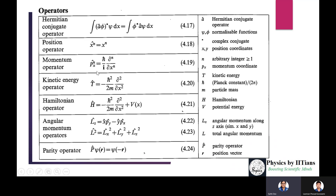The position operator is x^n. The momentum operator px (or px^n) can be written as (h-bar / i) del/del-x, or (i h-bar)^n del^n/del-x^n. The kinetic energy operator T-hat equals minus h-bar squared over 2m times del^2/del-x^2. The Hamiltonian H-hat equals minus h-bar squared over 2m times del^2/del-x^2 plus V(x).